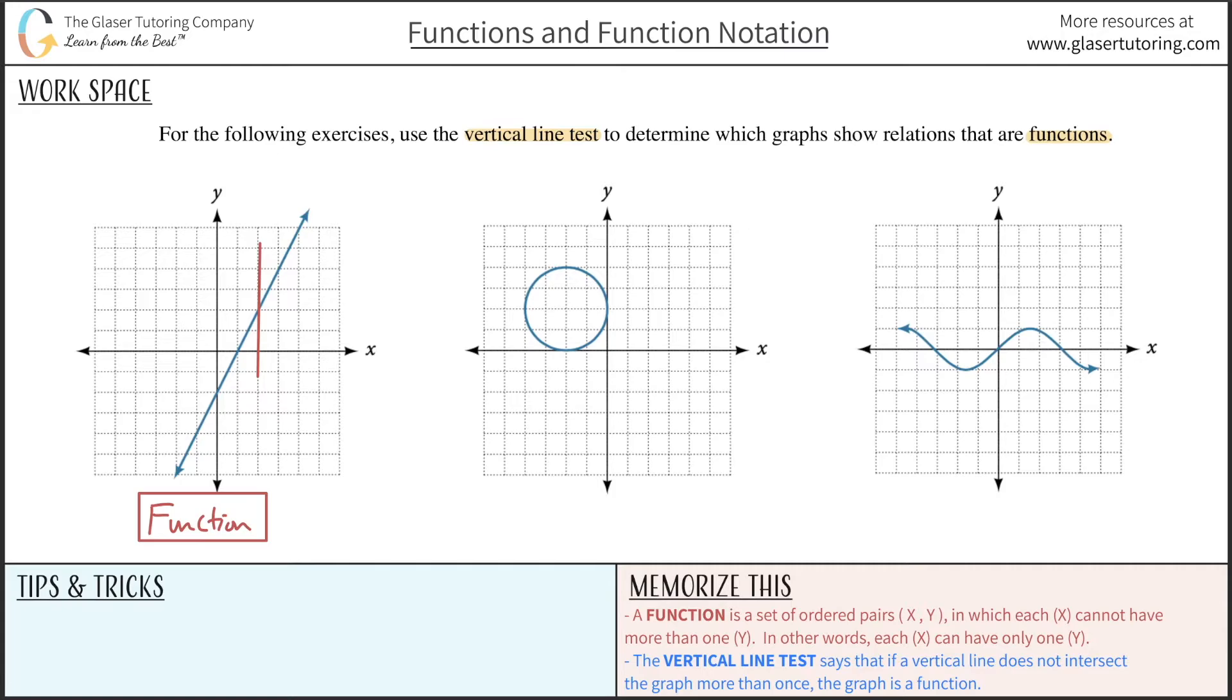How about number two? This one's easy. Just draw your vertical line. How many points does it intersect? Two points. Anytime it intersects two points at any location, it's always not a function.